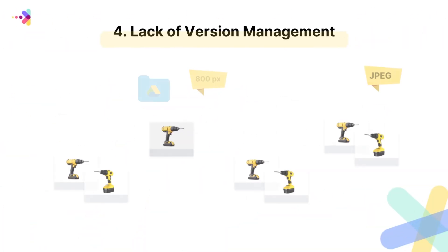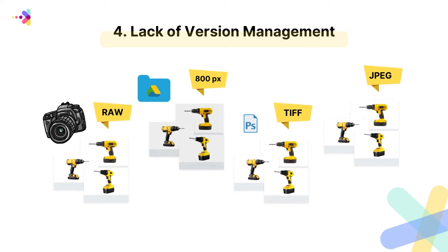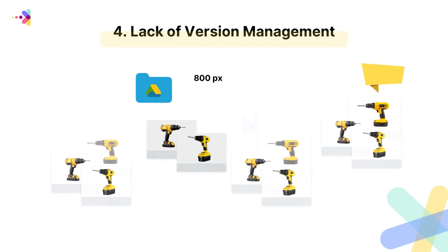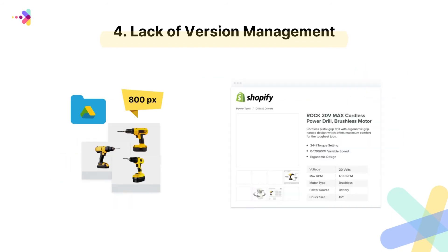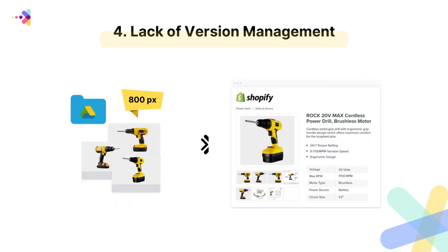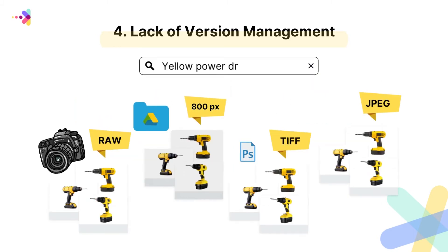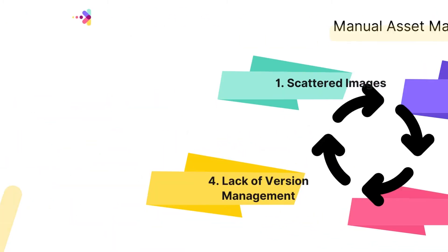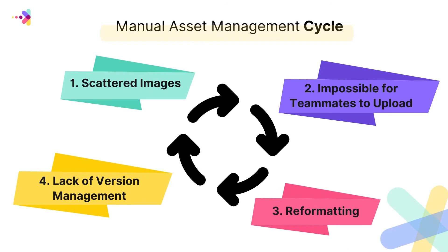And once that's done, you face a huge lack of version management and consistency because storing and keeping all those versions after reformatting can be difficult to manage, resulting in lesser quality images accidentally making their way into your Shopify store, or even more photos that you and your team have to sift through to find the correct version. And when you can't find your images, you're back to square one of the cycle.